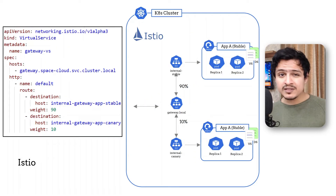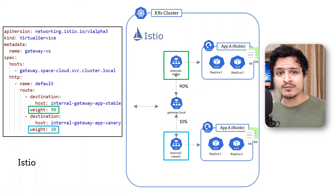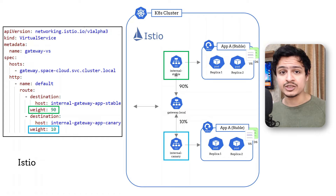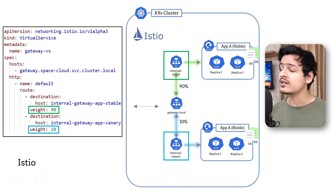We can specify multiple destinations and attach a weight to each one of them. The weight represents the percentage of traffic that should be forwarded to that destination. In this case, we are forwarding 90% of traffic to the stable version and the rest is going to the canary version. I have made a video dedicated to canary deployments using Istio — feel free to check that out if you want to know more.